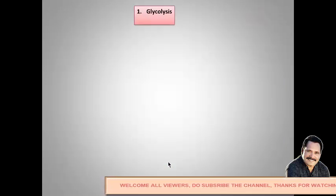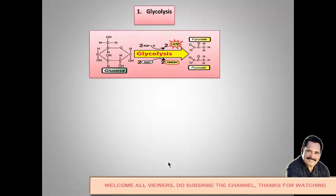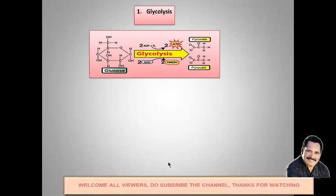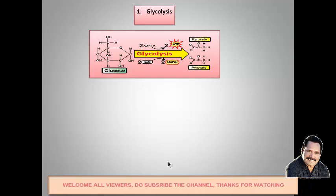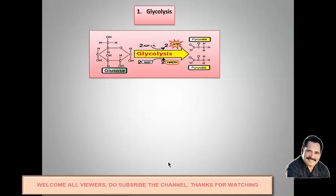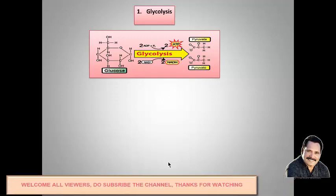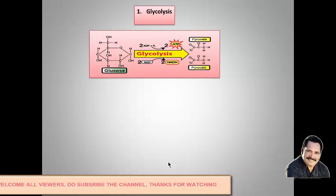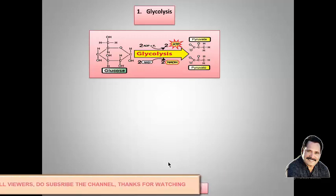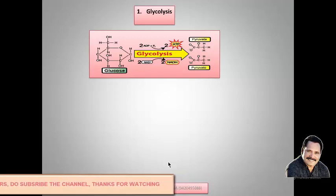In the respiration process, there are various steps. The first step is glycolysis, which means the breakdown of glucose. Glucose is a six-carbon compound which gets broken down into a three-carbon compound called pyruvic acid. In this process, we get two molecules of pyruvic acid, two molecules of ATP, two molecules of NADH₂, and water molecules.